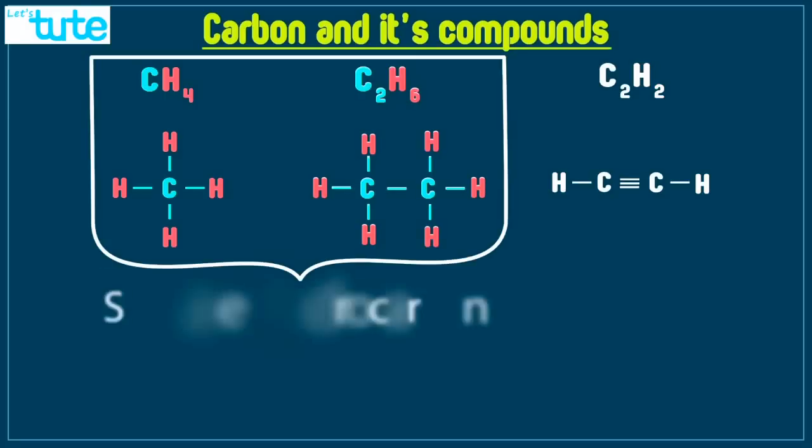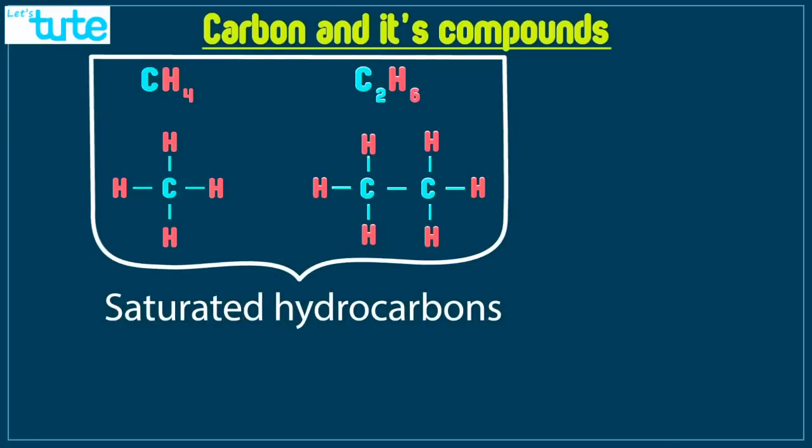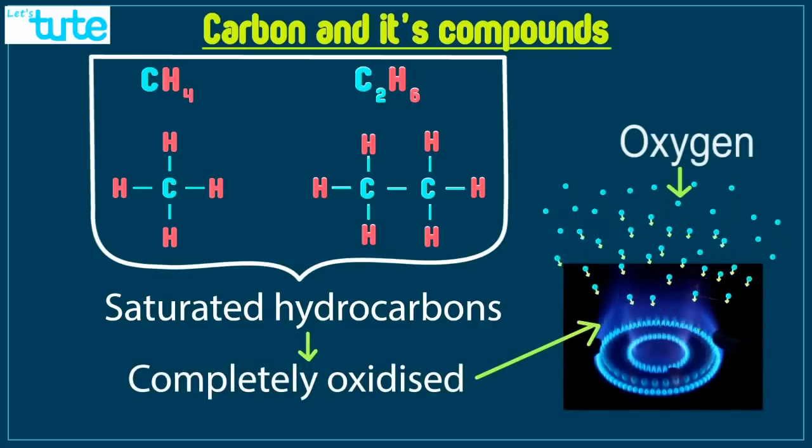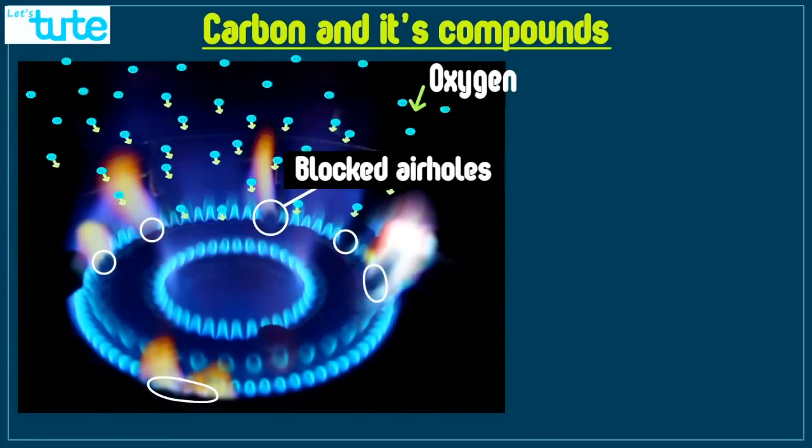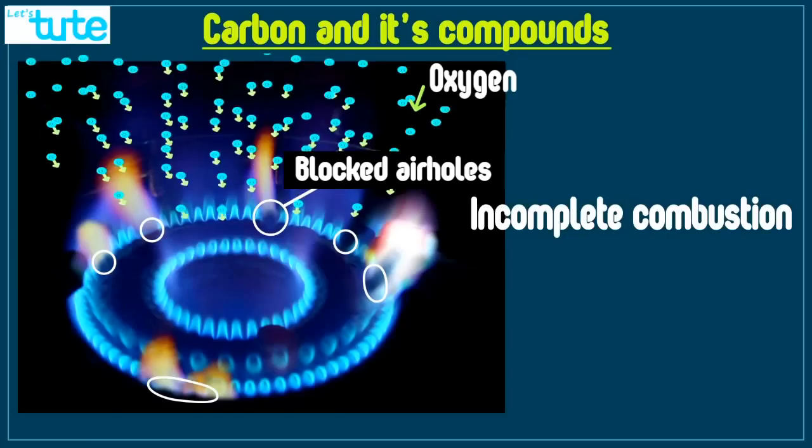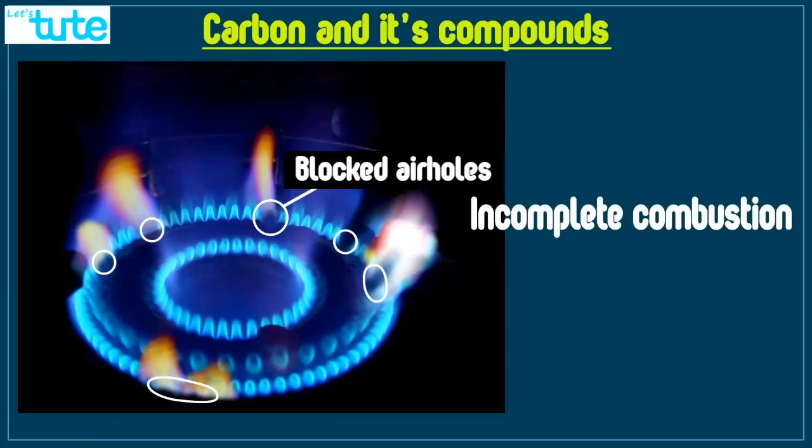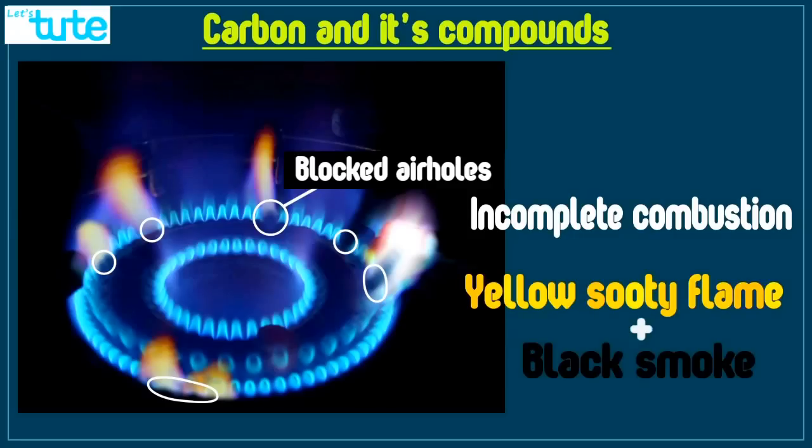That is the reason why saturated hydrocarbons get completely oxidized to give us blue flame. Now if the air supply is limited or decreased in case of saturated hydrocarbons, incomplete combustion takes place. This results in the production of yellow sooty flame and it also gives us black smoke.